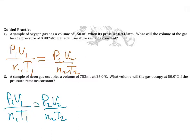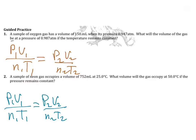Let's go through some practice problems where we're going to calculate a variable if there's a certain change in condition. This equation here is called the combined gas law. We have the initial pressure, the initial volume, the initial moles, and the initial temperature — these are our beginning conditions.